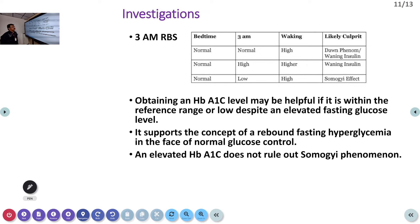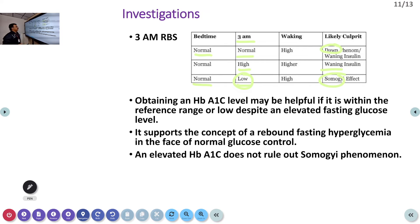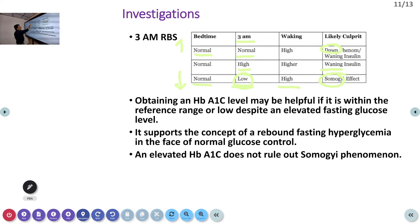Whenever we have early morning high blood sugar, it is a very important problem in the emergency room, ICUs, or in patients getting very high morning blood sugars at home. In the Dawn phenomenon, the 3am blood sugar is normal or slightly higher, but in the Somogyi phenomenon it is very low. You should remember the Somogyi phenomenon especially, because that is the most dangerous condition — if you increase the night dose insulin further, severe hypoglycemia can occur.